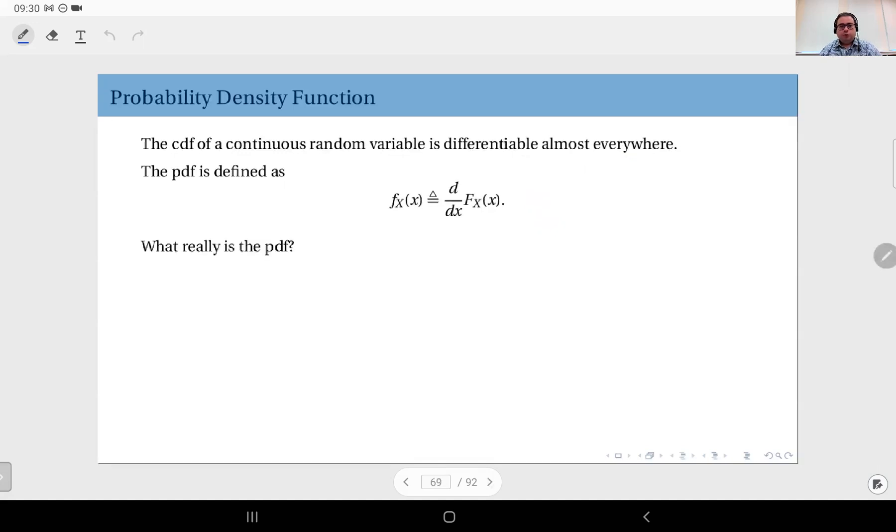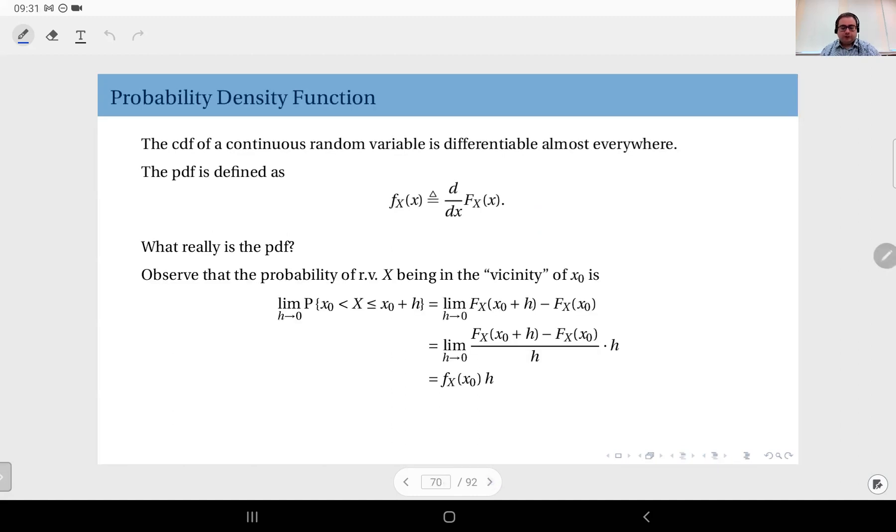So why do we use the PDF function? What's its significance? We already have the CDF - why don't we work with the CDF all the time? What really is the PDF? Now let's look at the probability of a random variable X being in the vicinity of some value x_0.